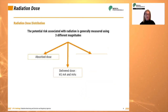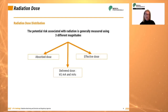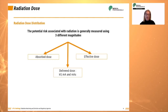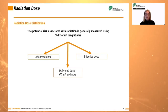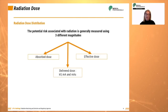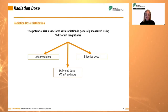The potential risk associated with radiation is generally measured using three different magnitudes: the absorbed dose, the effective dose, and the delivered dose. These values are influenced by the radiation flow rate and the energy of the radiation. Exposure rate is the exposure produced per unit of time. The SI unit of exposure rate is the coulomb per kilogram; in conventional units it is measured in milli-Röntgen per second or Röntgen per hour.